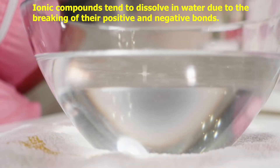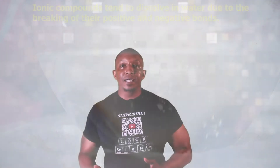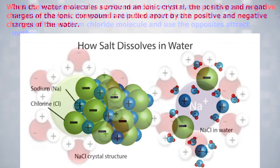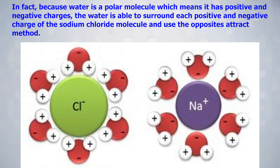This means that it takes a lot of heat to break their chemical bonds. Ionic compounds tend to dissolve in water due to the breaking of their positive and negative bonds. When the water molecules surround an ionic crystal, the positive and negative charges of the ionic compound are pulled apart by the positive and negative charges of the water. In fact, because water is a polar molecule — which means it has positive and negative charges — water is able to surround each ion using the opposites-attract method.